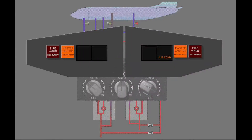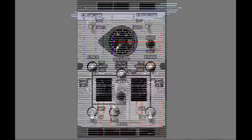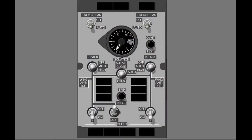Push the master caution light to reset the warning system. To decrease the temperature in the related trim air supply duct, select a colder temperature with the related temperature selector. To let the trim air modulating valve operate as usual and to extinguish the zone temperature light, push the trip reset switch on the air conditioning bleed air controls panel.